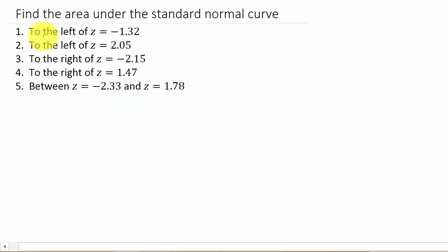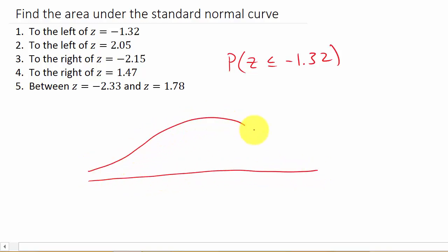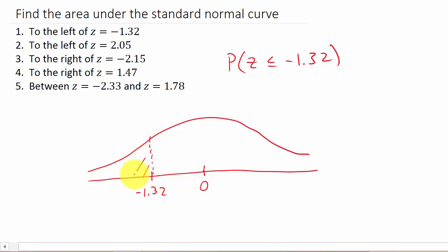Here they want us to find the area to the left of z equals negative 1.32. So we're finding the probability that z is less than or equal to negative 1.32. Let's go ahead and draw a picture. On the standard normal curve the mean is zero — that's in the middle. We're looking for z less than negative 1.32, so here we have negative 1.32, and we're looking for this area to the left.